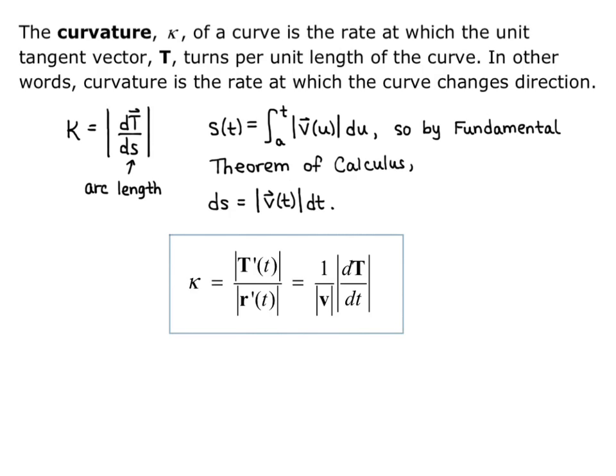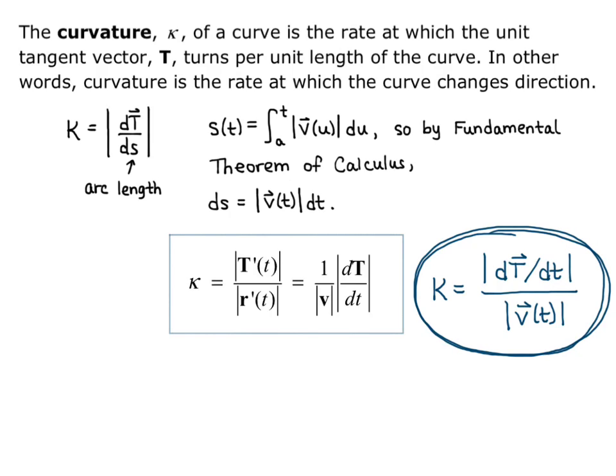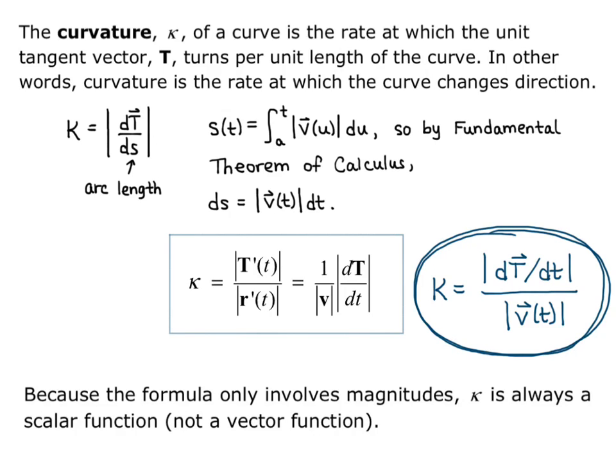More commonly, the formula is written as kappa equals 1 over the magnitude of velocity times the magnitude of the derivative of the unit tangent — equivalently, kappa equals the magnitude of d capital T over d lowercase t divided by the magnitude of velocity. That's the formula we'll use in calculations in coming videos. Because the formula only involves magnitudes, curvature kappa is always a scalar function, not a vector — it will be a single expression, not a vector.